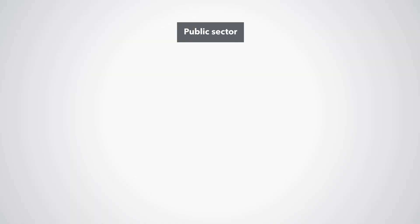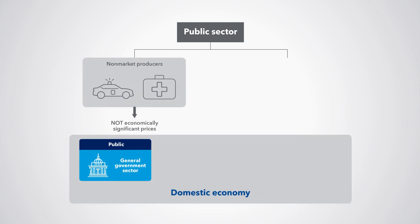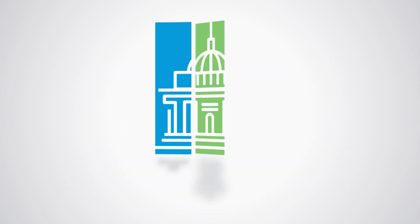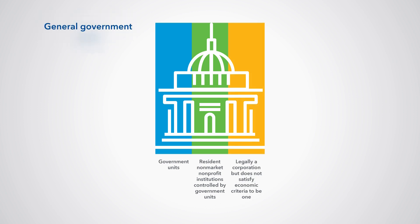Comprehensive public sector debt statistics and GFS should cover all entities that affect fiscal policies and through which government conducts its fiscal policies. At the broadest level, we refer to all these entities that are controlled by government as the public sector. We divide the public sector into two main groups based on whether they are non-market producers or market producers. First, the general government sector.